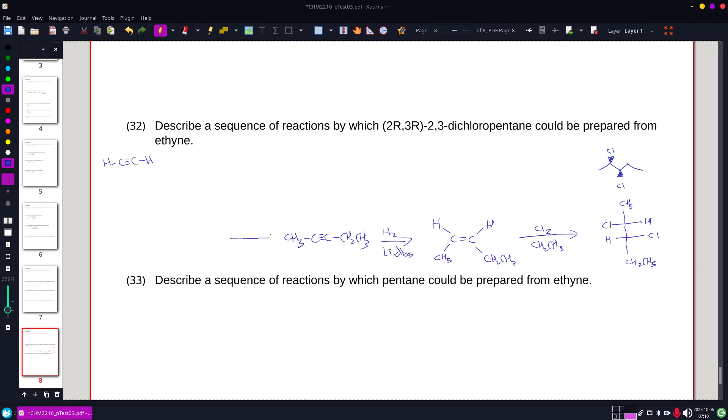And two steps to do this from our alkyne. We do sodium amide followed by CH3-Cl and sodium amide followed by Cl-CH2-CH3.